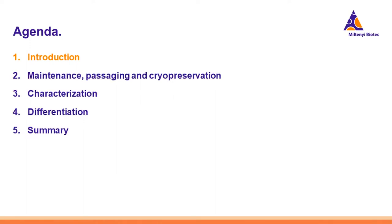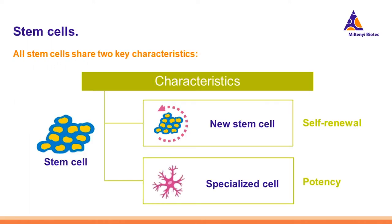Let's start with a quick introduction on stem cells. All stem cells show two key characteristics. On one hand, they have the capacity to self-renew and produce more of the same cell type. On the other hand, when they are exposed to certain patterning factors, stem cells have the ability of differentiating into many different specialized cell types.